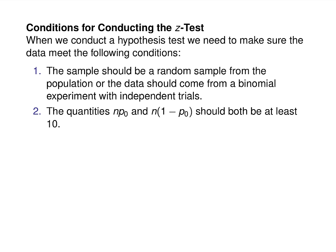When conducting these Z-tests, the data must meet certain conditions. First, the sample should be a random sample from the population, or the data should come from a binomial experiment with independent trials. Second, both n×P-naught and n×(1 − P-naught) should be at least 10, ensuring that the number of observations in each category is at least 10.